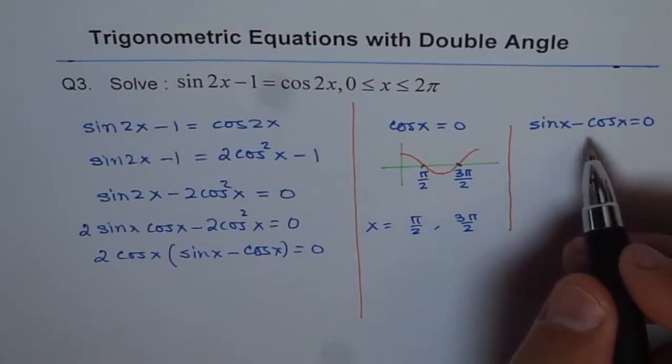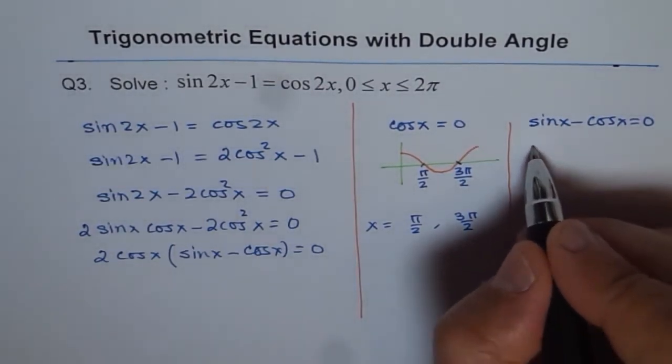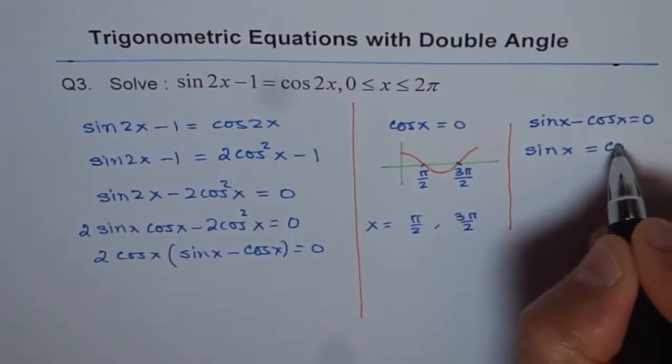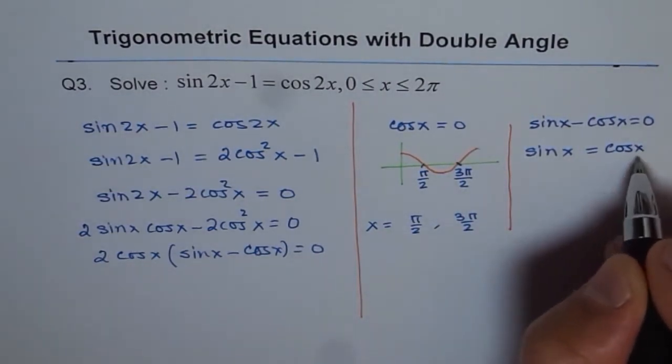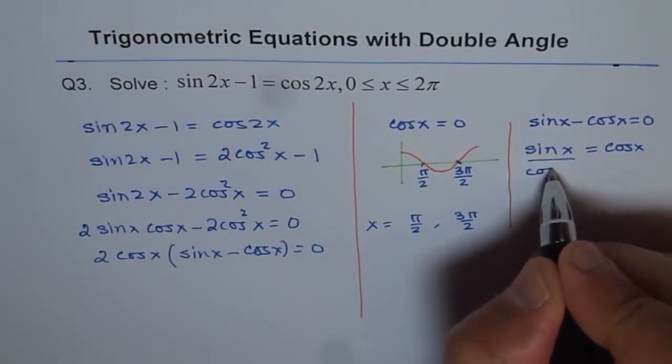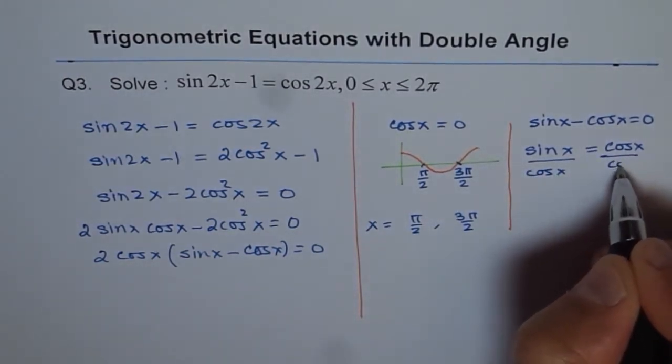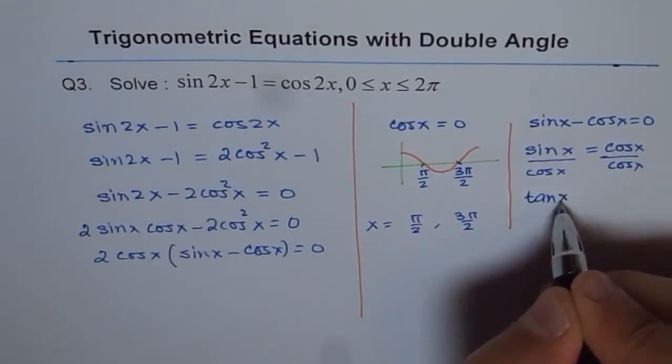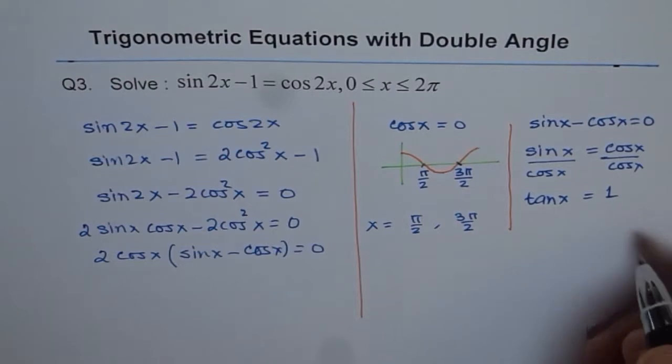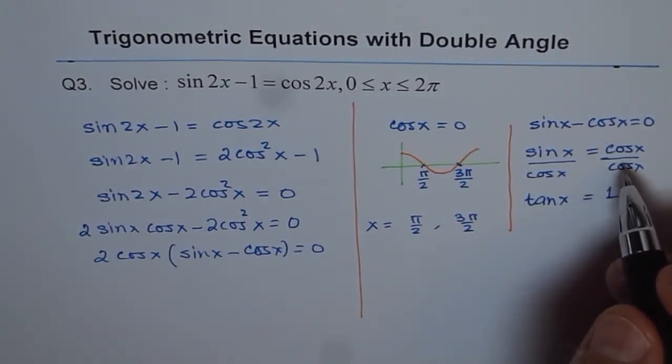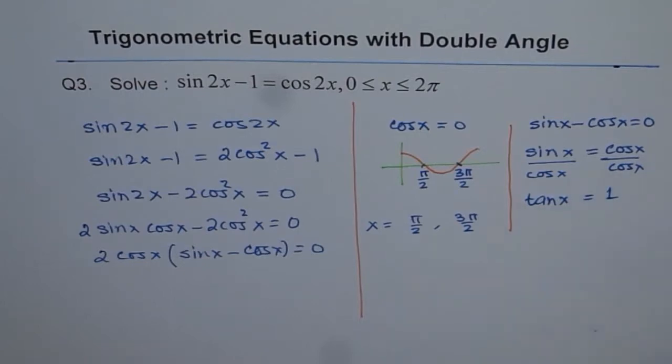Now to solve this, we can write sin x equals cos x. We can divide both sides by cos x. If we do that, we get tan x equals 1. Remember, tan x equals 1 means there are two possible solutions for us.